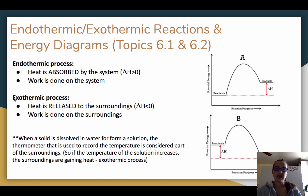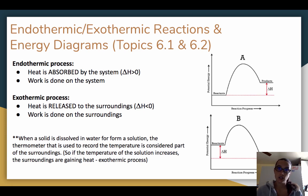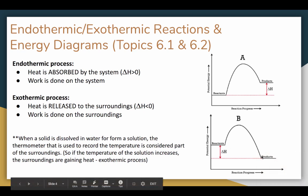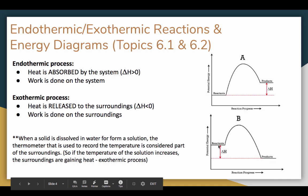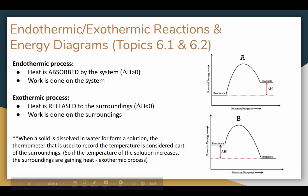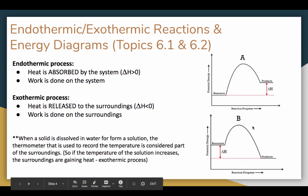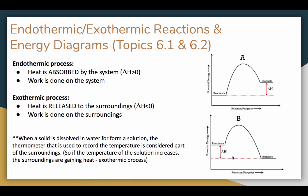In an exothermic process, heat exits the system — it is released from the system to the surroundings. Remember, when we're talking about absorbed and released, we're always talking about the system. Delta H is less than zero, so delta H is negative and Q is negative, or work is done on the surroundings. In diagram B, the products are at lower energy than the reactants, meaning the reactants lose energy, so diagram B represents an exothermic process.